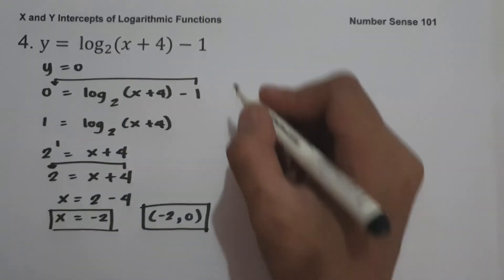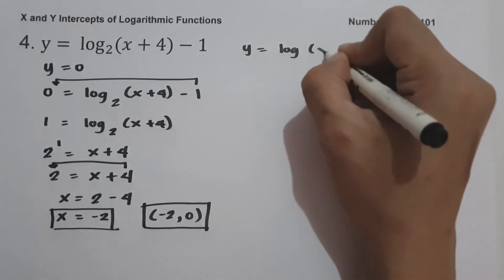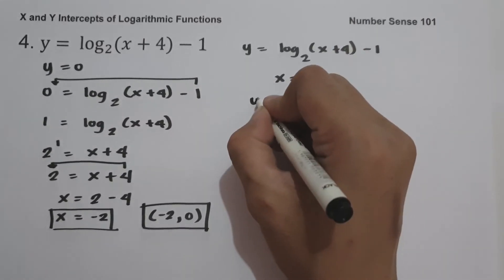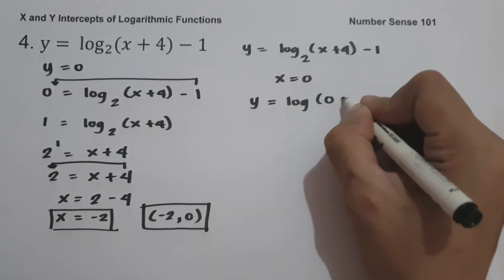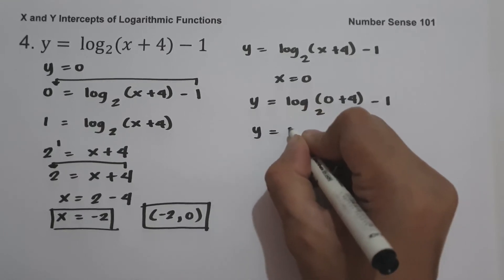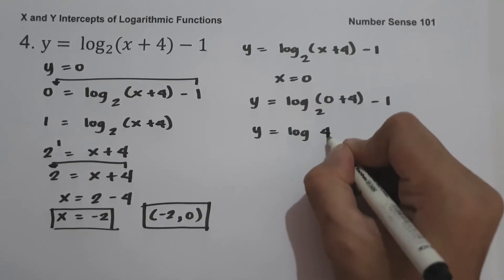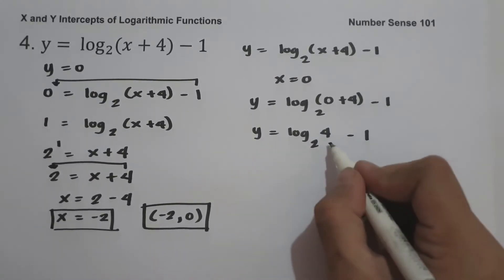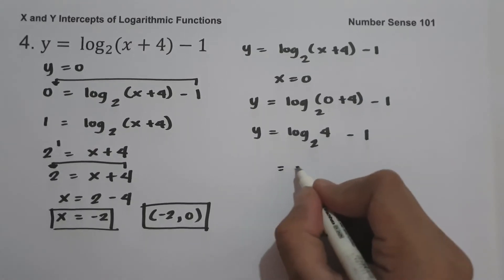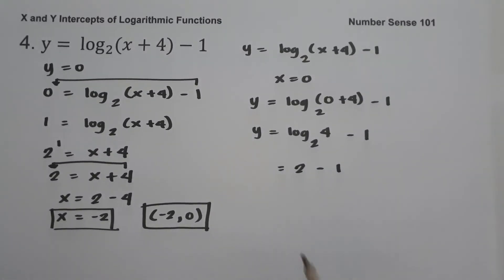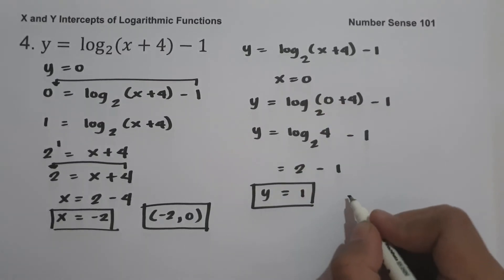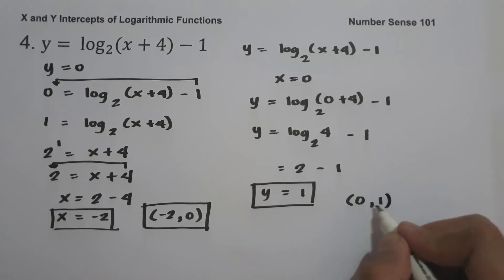And for the y-intercept, let us have y equals log(x + 4) base 2 minus 1, and set x equal to 0. So this will be y equals log(0 + 4) base 2 minus 1. Simplifying: y equals log 4 base 2 minus 1. Since our argument is greater than 0, log 4 base 2 is 2, so y equals 2 minus 1, which is 1. Since the value of x is 0 and y is 1, our y-intercept is (0, 1).